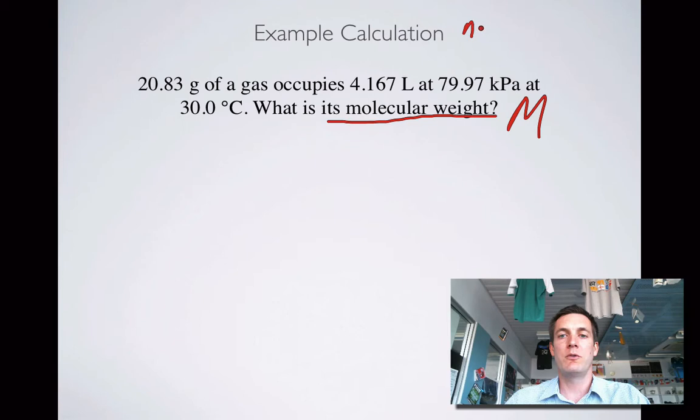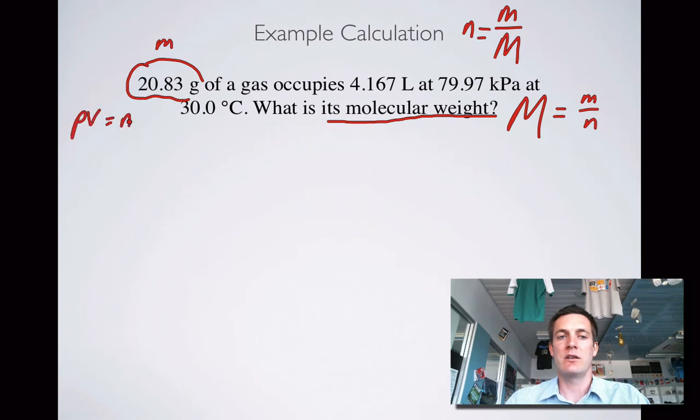We know that a formula for little n is m over big M, that means that we know that big M is equal to little m over n. How does that help us here? Well we've got little m there, that's the mass of the substance. But the rest of it is P, V and T. So this looks like we're going to have to use PV equals nRT.